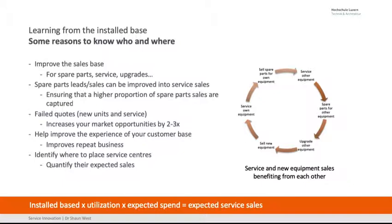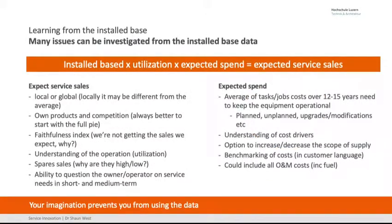Now I've got an equation. The installed base — number of units — times the utilization, times the expected spend per year, gives you expected service sales in aggregate. It'll be wrong for every individual location, but in aggregate it's about right. Using that equation, we can understand what the whole market looks like because we know how many pieces of equipment are out there and the expected spend per year. We can also see how much of that pie we've got and whether customers have been faithful to us.